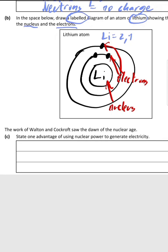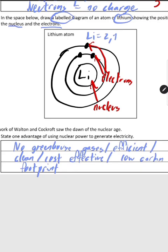Now Part C: state one advantage of using nuclear power to generate electricity. You can mention no greenhouse gases, or that it's efficient or that it's clean or cost-effective or that it has a low carbon footprint, meaning that it's better for the environment. If you do that, you get three marks. For the diagram, you get six marks with three marks for the labels and three for the actual diagram.